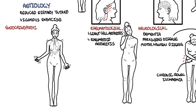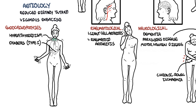Endocrinopathies — conditions related to the endocrine system — cause weight loss by increasing energy expenditure. These include hyperthyroidism, type 1 diabetes mellitus, and adrenal insufficiency.